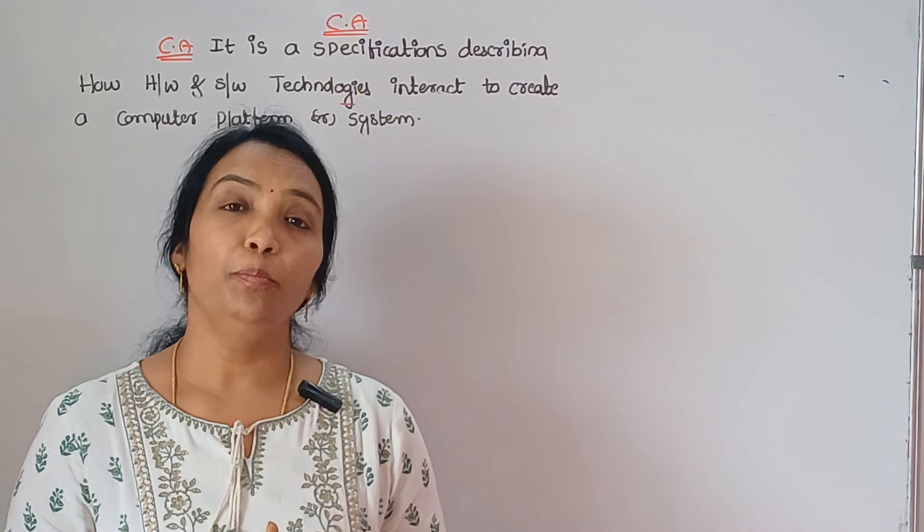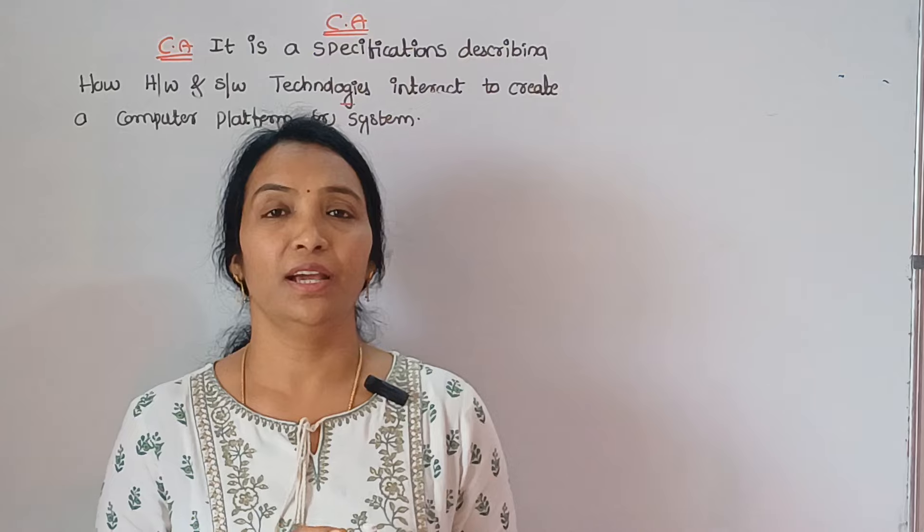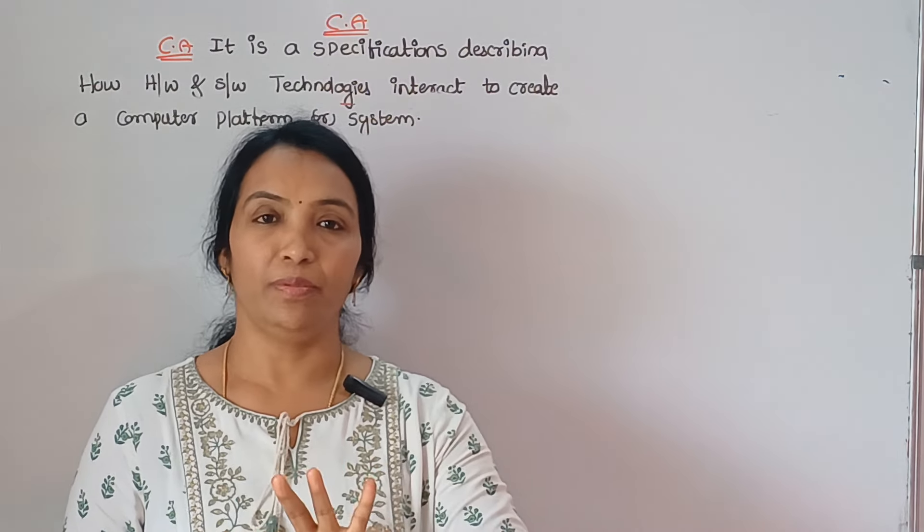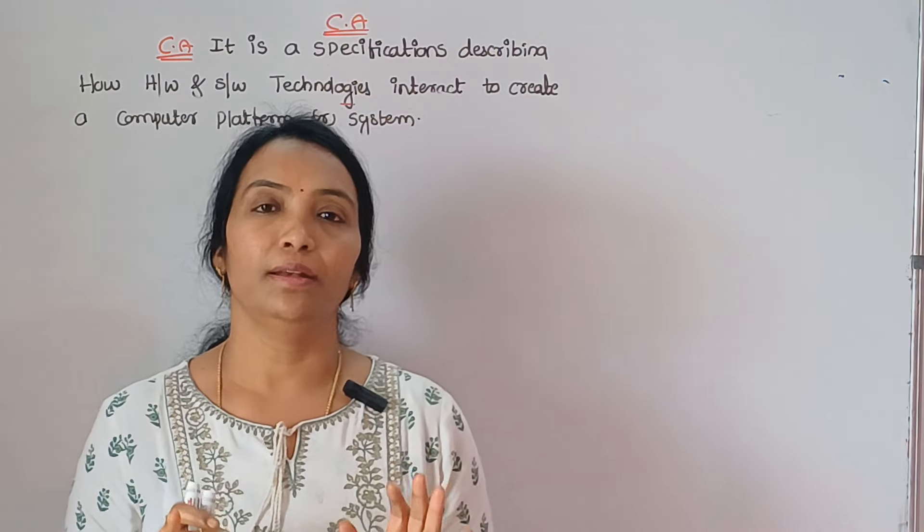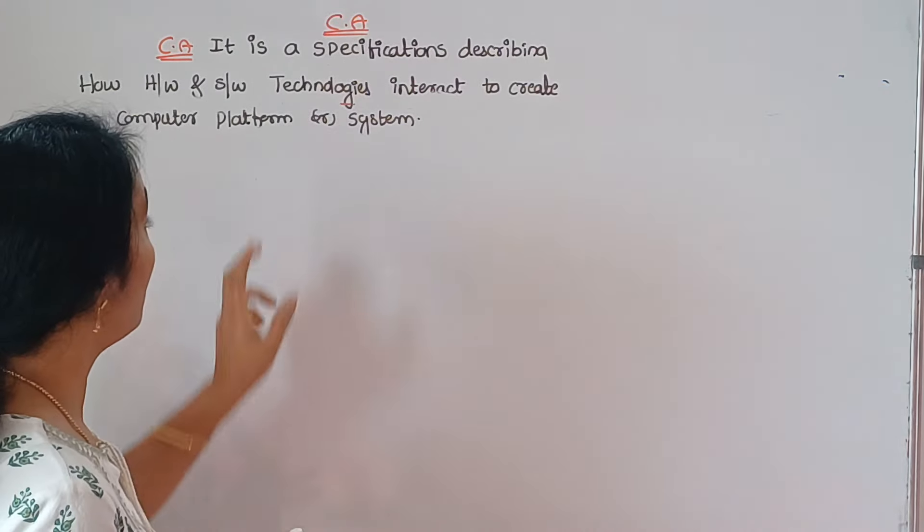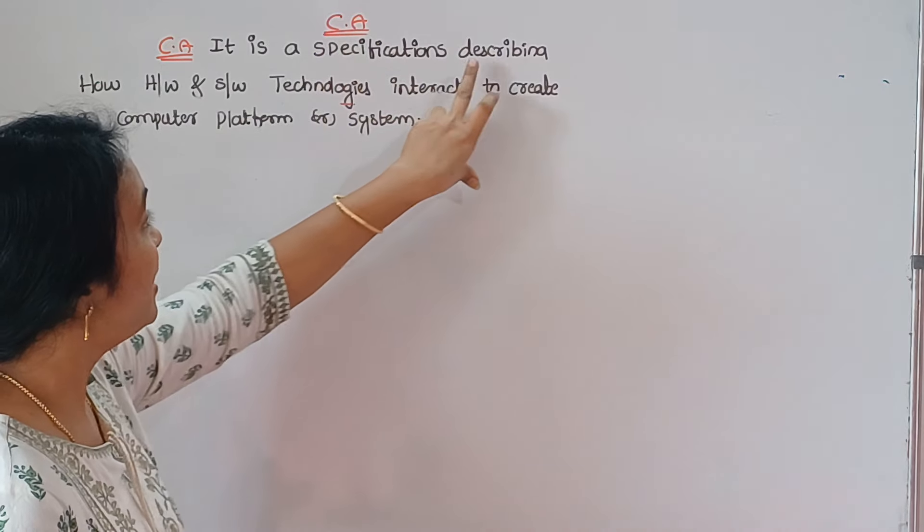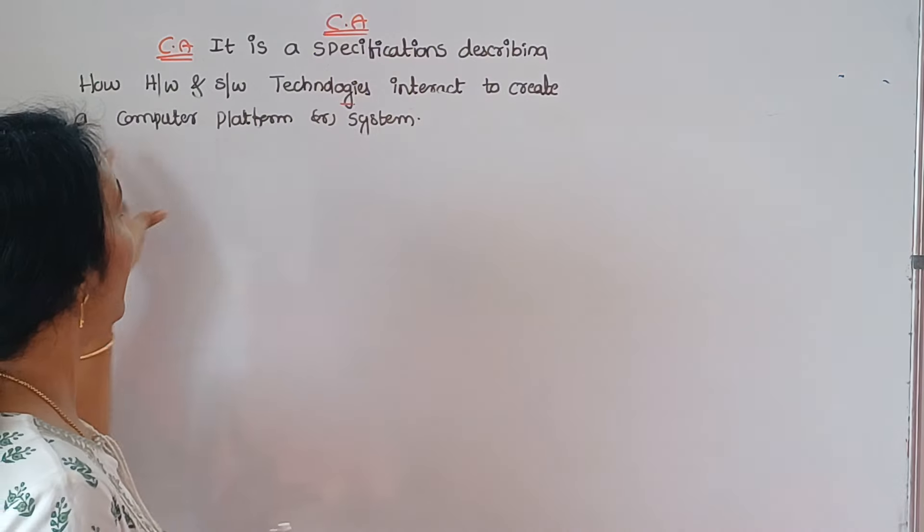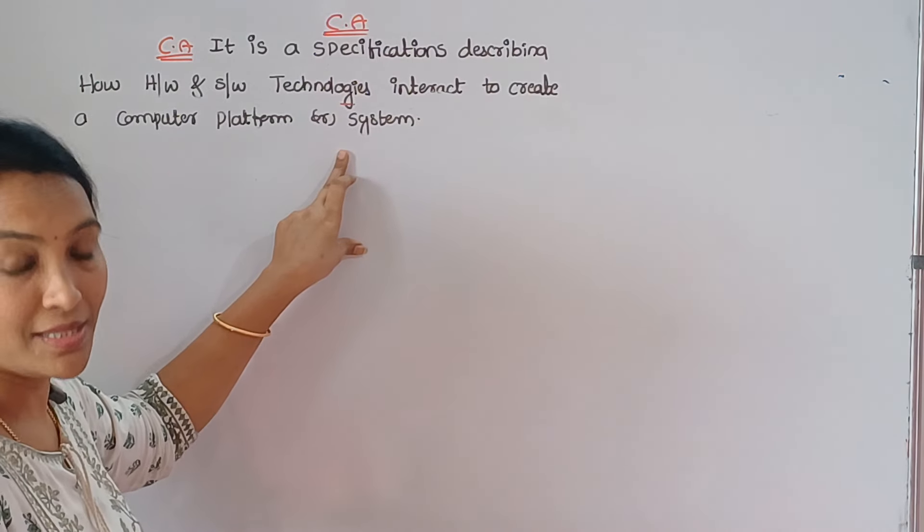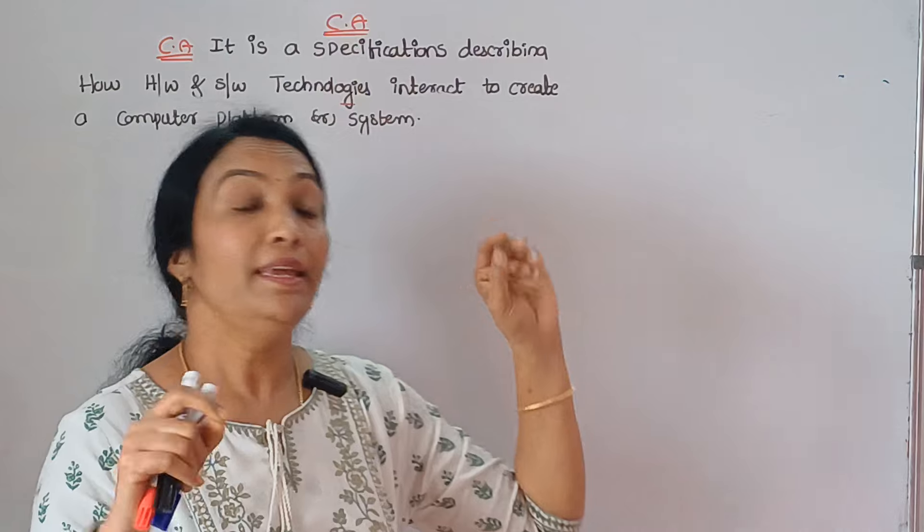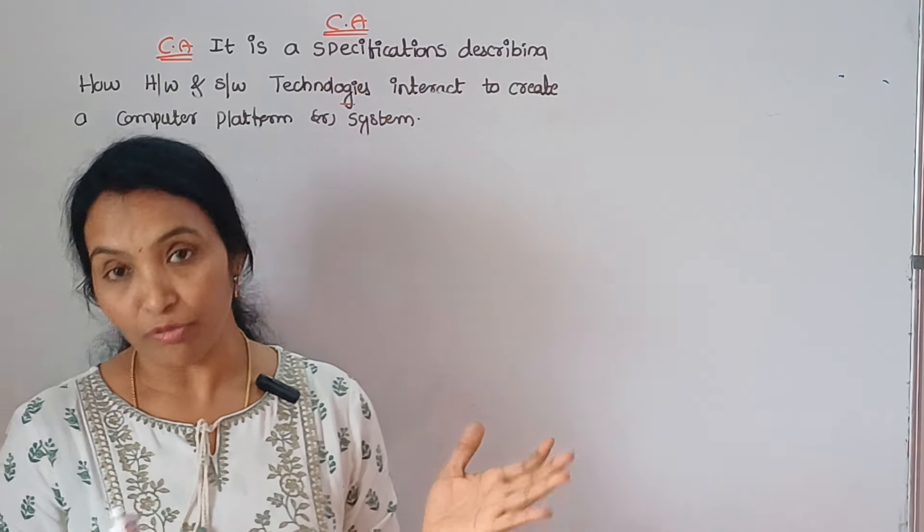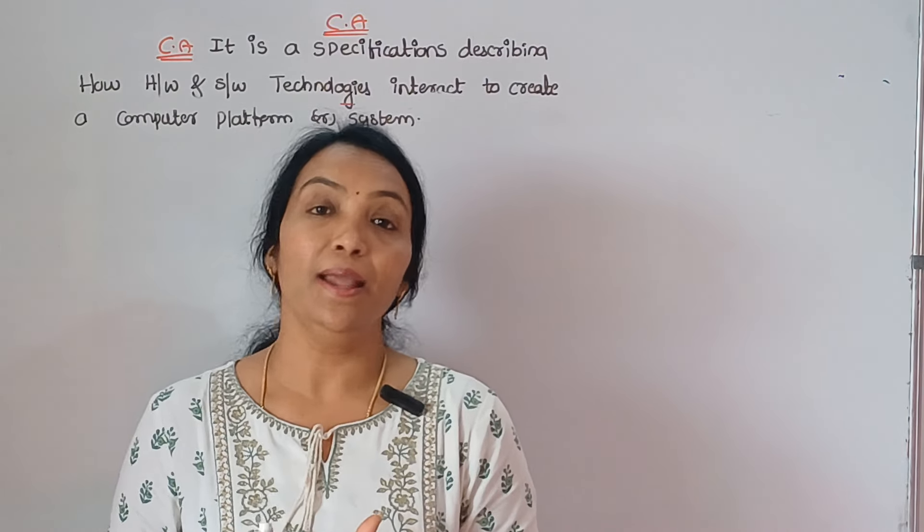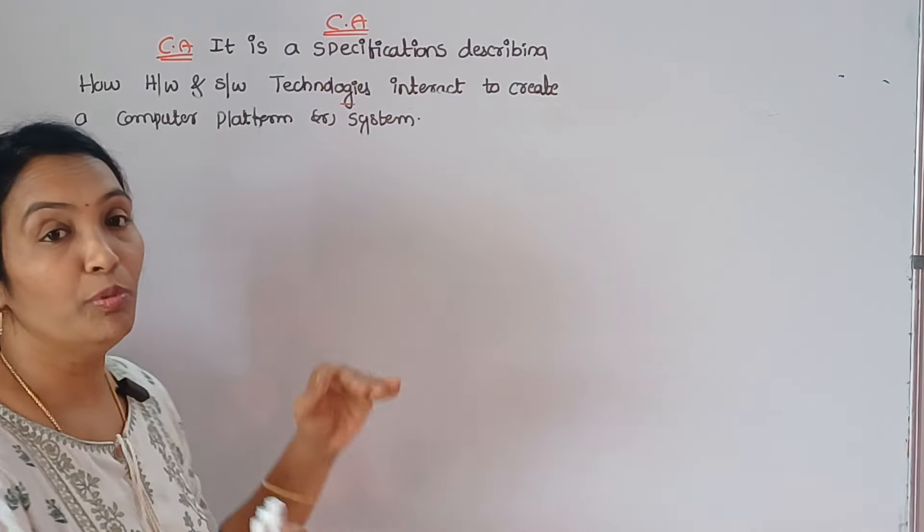Suppose you can change a program or change operation. This is a specification describing what it is. You can specify this one, do a comment on the hardware and software, do a computer platform, and do computer architecture.